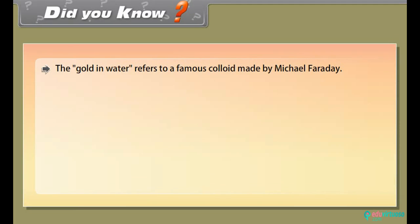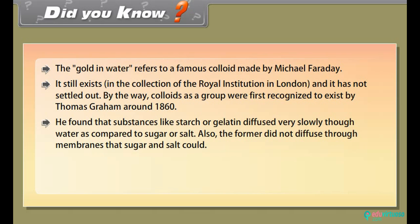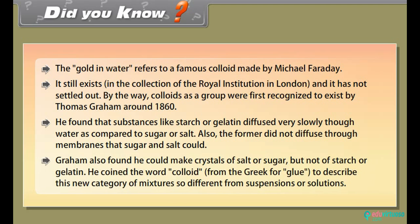Did you know? 'The gold in water' refers to a famous colloid made by Michael Faraday. It still exists in the collection of the Royal Institution in London and has not settled out. Colloids as a group were first recognized by Thomas Graham around 1860. He found that substances like starch or gelatin diffused very slowly in water compared to sugar or salt, and did not diffuse through membranes that sugar and salt could. Graham found he could make crystals of salt or sugar but not of starch or gelatin. He coined the word 'colloid' from the Greek for 'glue' to describe this new category of mixtures, so different from suspensions or solutions.